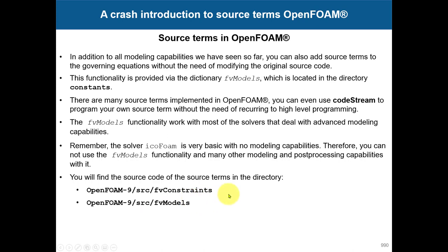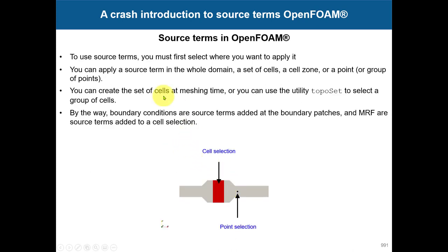The specific source that you will have here is fvModel. You can visit this directory, and also you can use foamInfo to find information. To use sources, you must first select where you want to apply it. It can be in the whole domain, it can be in a cell selection, or it can be in a point or multiple points. There is no limitation and you can apply multiple sources at a time.